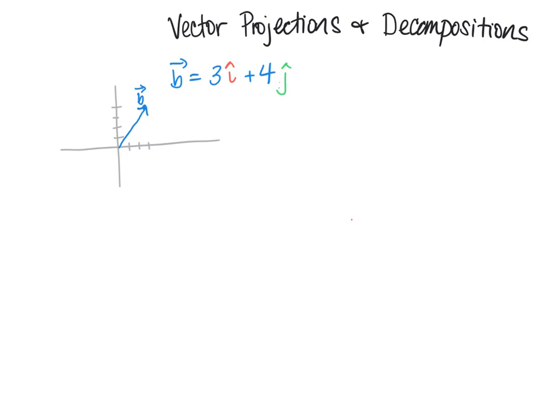In this video we're going to look at a quick intro of vector projections and decompositions. The first way we can think about this is to look at a basic vector 3i + 4j. Let's draw the vector — here's i-hat and here's j-hat, so you can see both components.